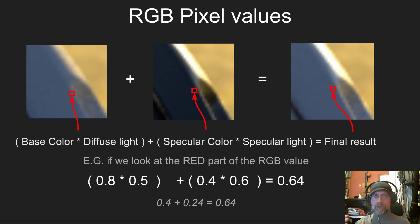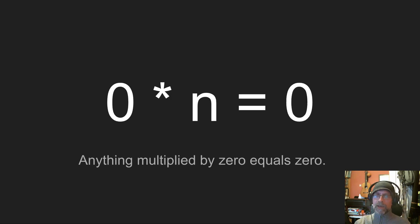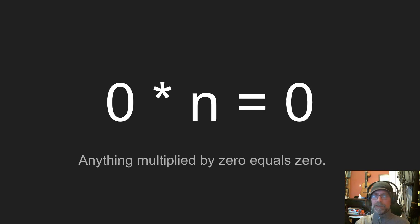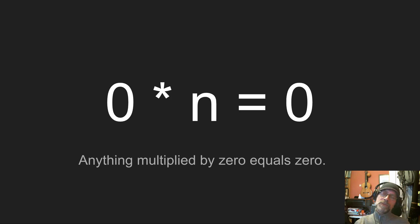Understanding this will help greatly if you move on to more advanced subjects like lighting compositing. We care because there are consequences to this math — to this simplification of what actually happens in real life. And that is that anything times 0 is also equal to 0.